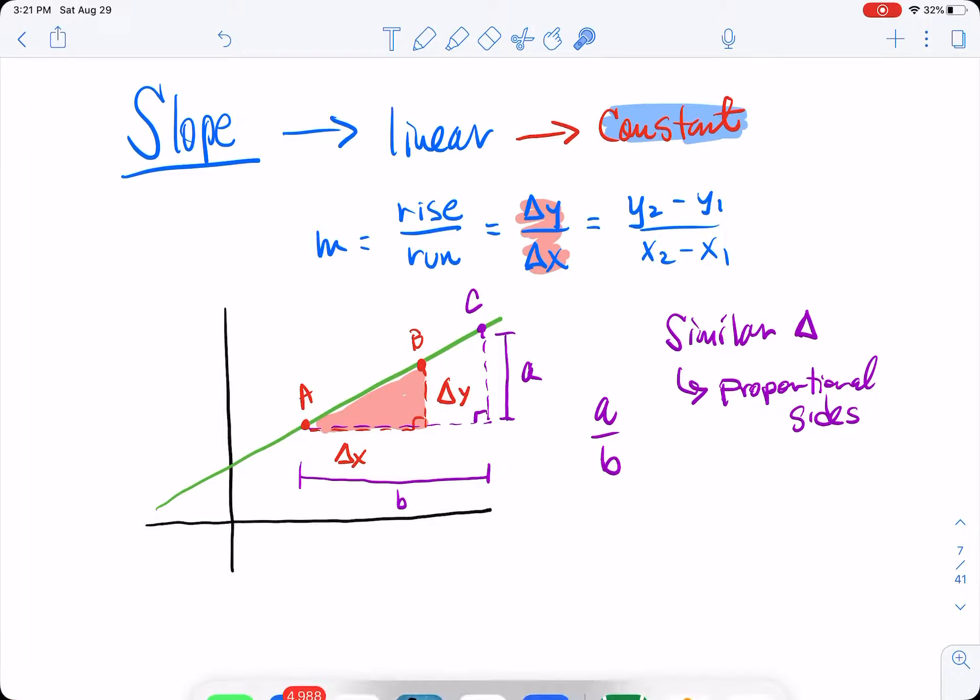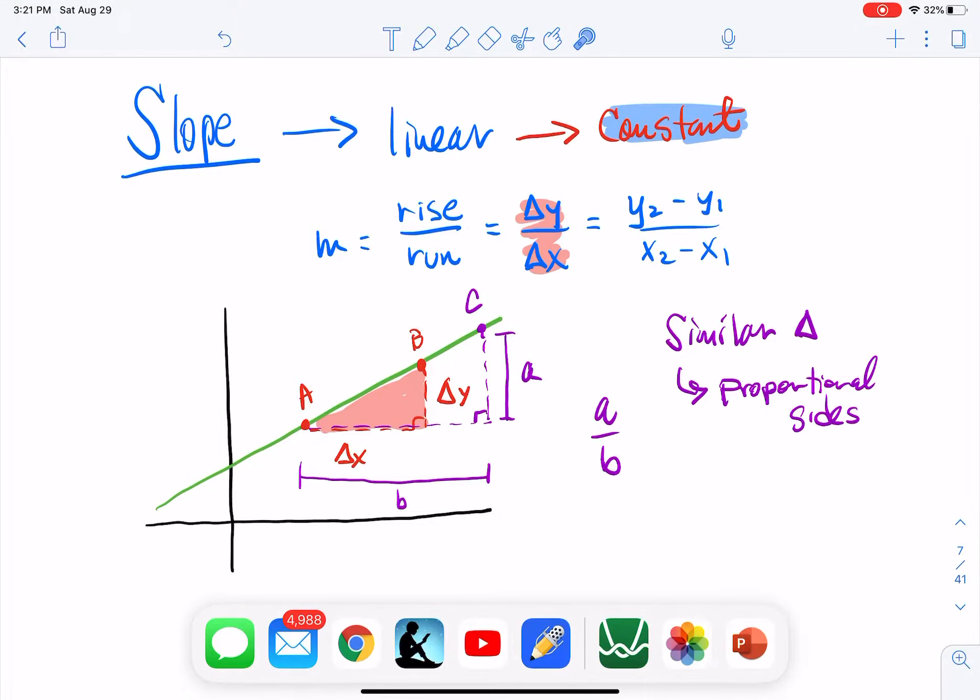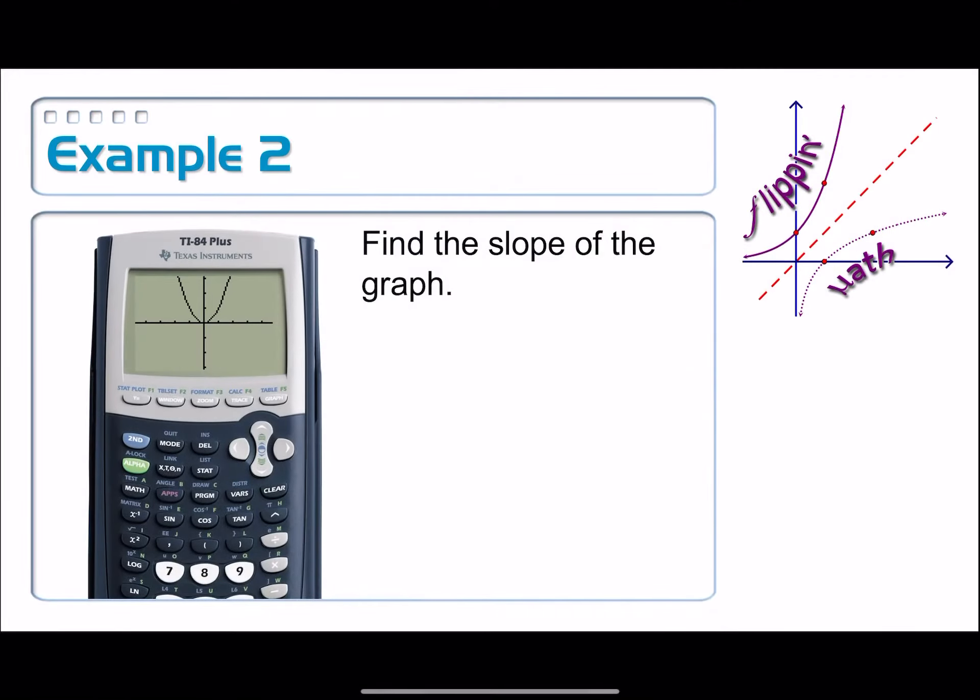Okay, well, that's easy enough. Man, calculus is going to be a breeze if that's all it was. It's not. Okay, anyway, so let's look at example two. Let's find the slope of this graph. Hmm, that looks like a parabola.